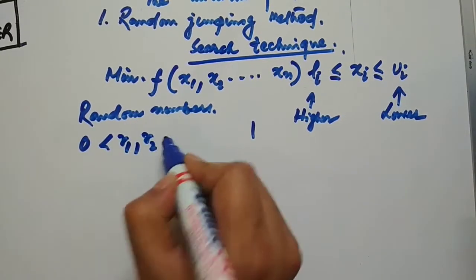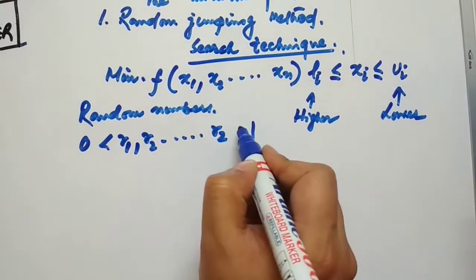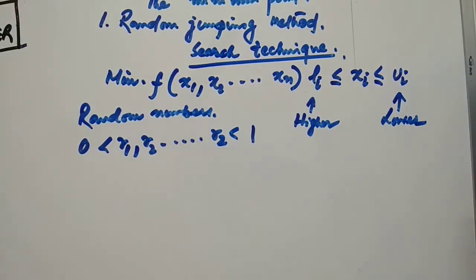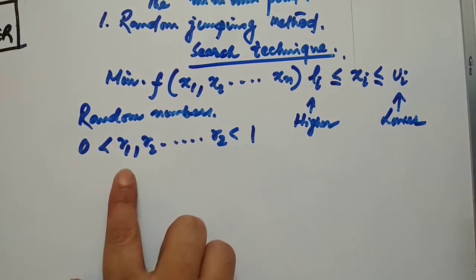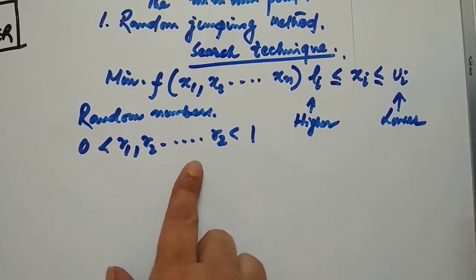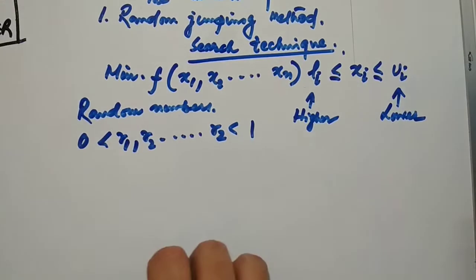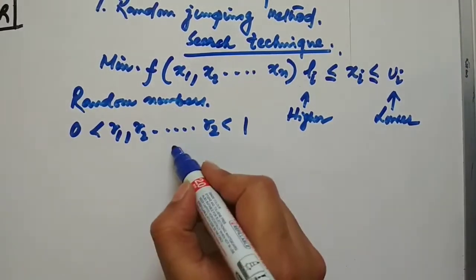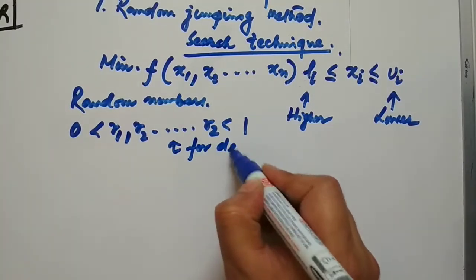You have to generate random numbers r1, r2, ..., rn that lie between 0 and 1. These random numbers correspond to the decision variables x1, x2, ..., xn.